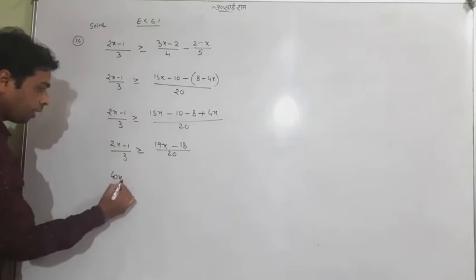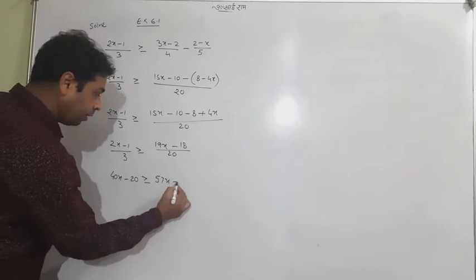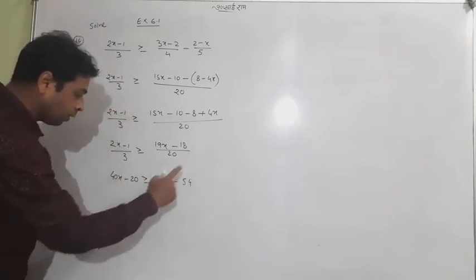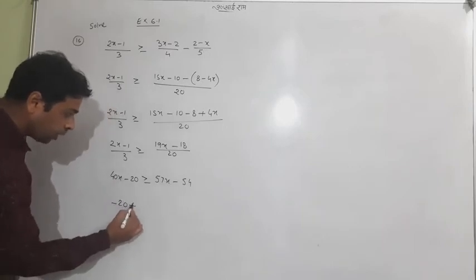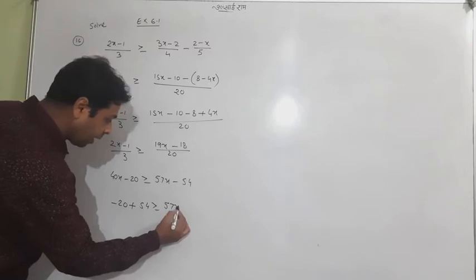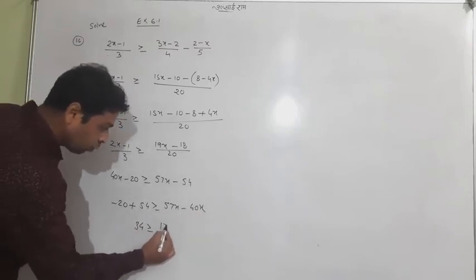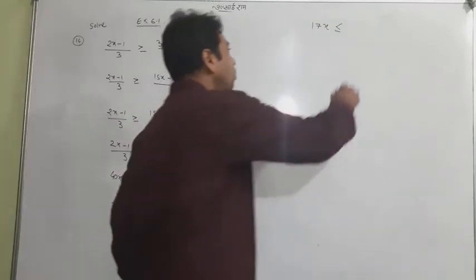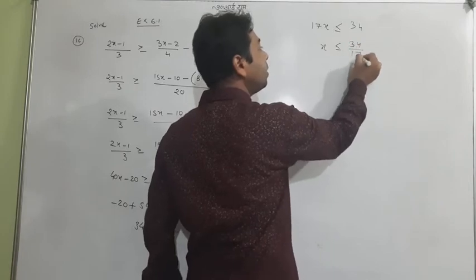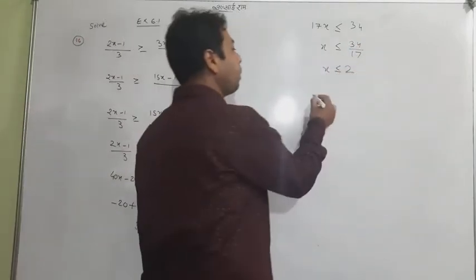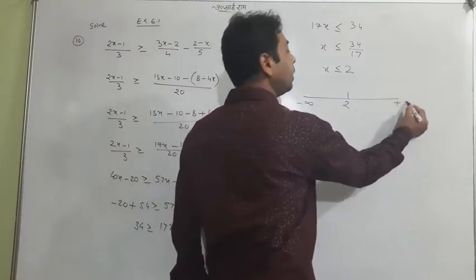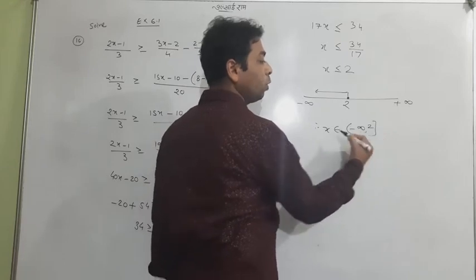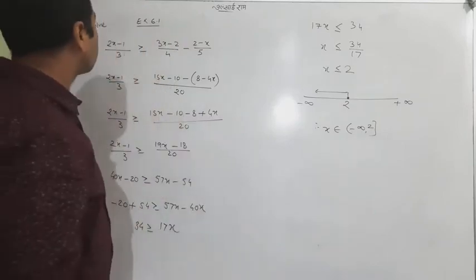Cross-multiply: we get 57 is larger than 40, so transfer the x terms. We get 57x − 40x = 17x and the constants give 54 − 20 = 34. So 17x ≤ 34, meaning x ≤ 34/17 = 2. On the number line, x ≤ 2 means the answer is (−∞, 2]. It seems tough but it is not — it's very easy.